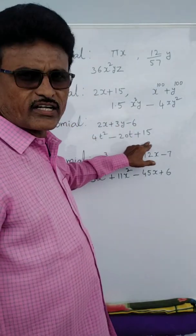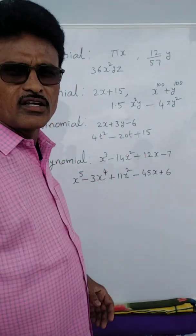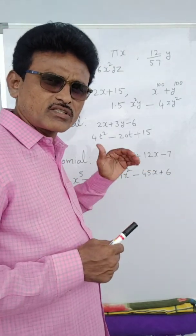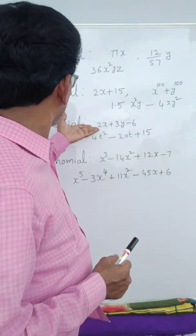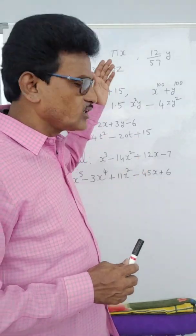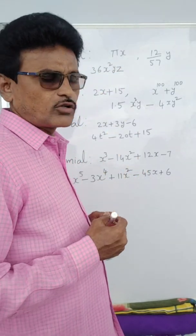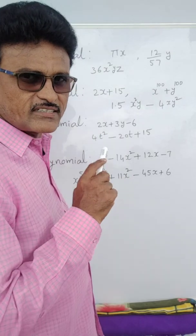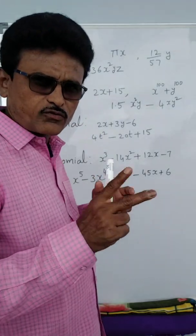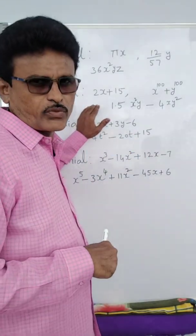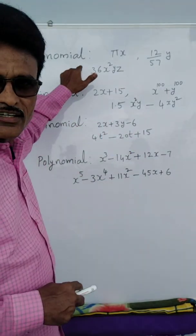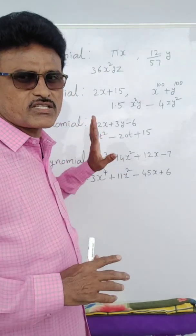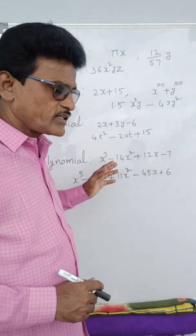Trinomial means three terms. Example: 2x plus 3y minus 6 — here 1, 2, 3 terms. Now if four or more than four terms are there it is said to be a polynomial. Someone may get a doubt: are monomial, binomial, trinomial also polynomials? Actually all these are polynomials. Polynomial means combination of terms. Single term is given the special name 'monomial' (mono = single), two terms 'binomial' (bi = two), three terms 'trinomial' (tri = three).